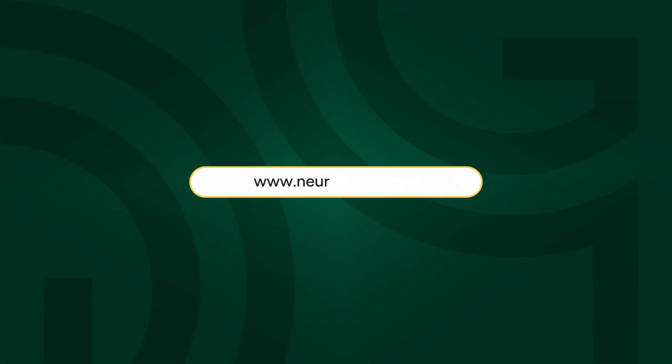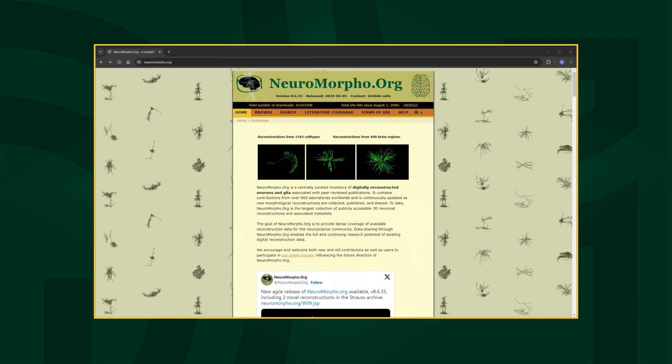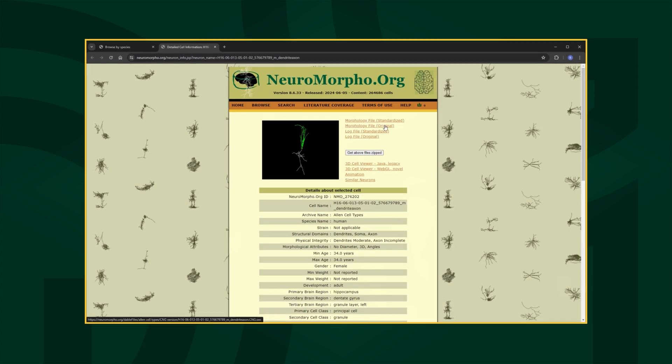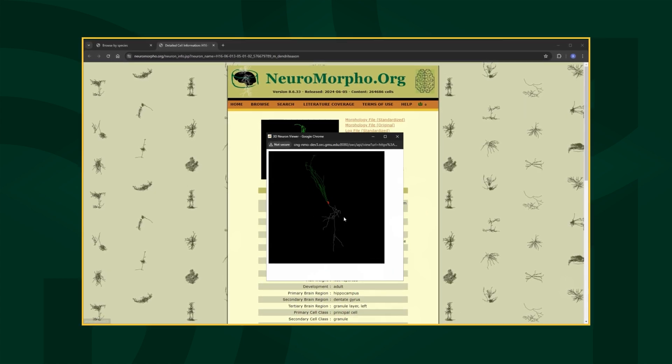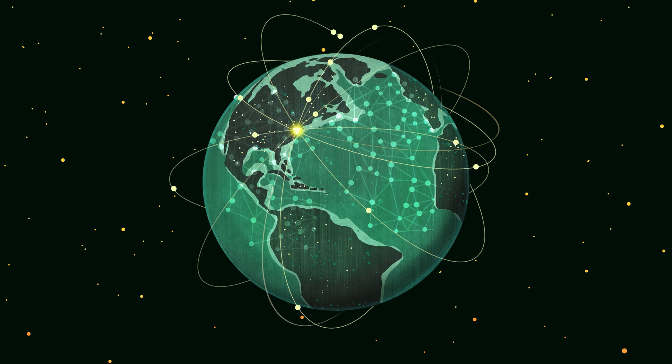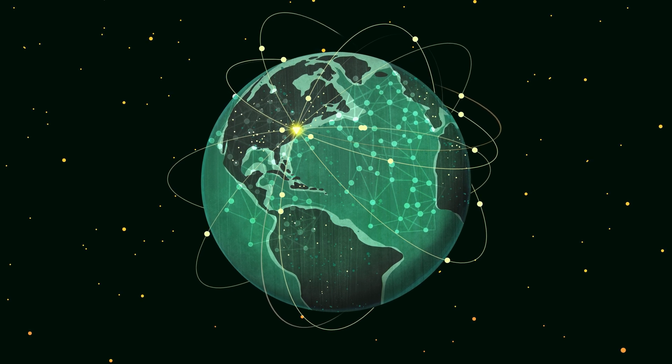Neuromorpho.org, the brainchild of Dr. Ascoli at George Mason University, is kind of like a social network for neurologists and researchers around the globe. Researchers can download maps of nerve tracings that were created by other teams on the other side of the world and upload their own, all in the name of open and free information sharing.